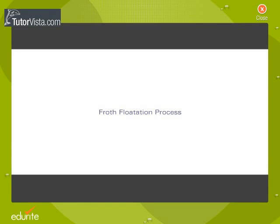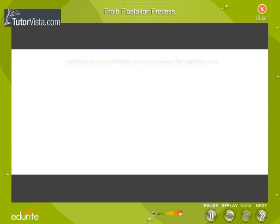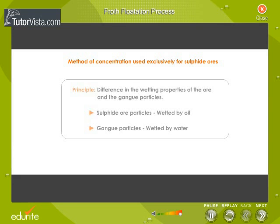Froth Flotation Process. This is a method of concentration of ores used exclusively for sulphide ores. The principle involved is the difference in the wetting properties of the ore and the gang particles. The sulphide ore particles are preferentially wetted by oil, while the gang particles are wetted by water.